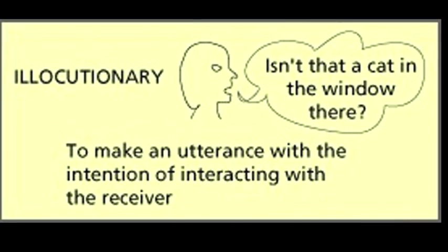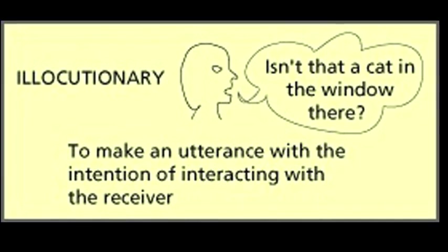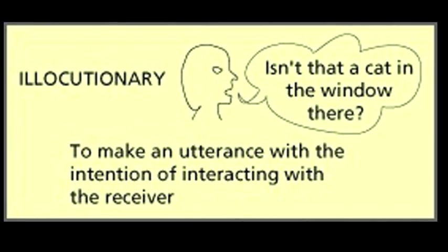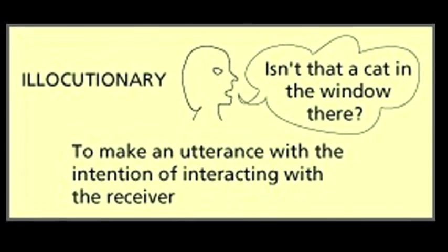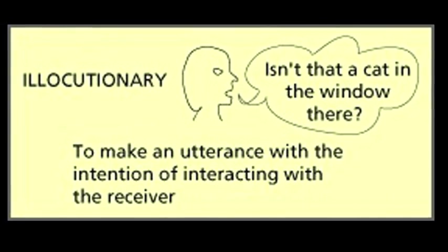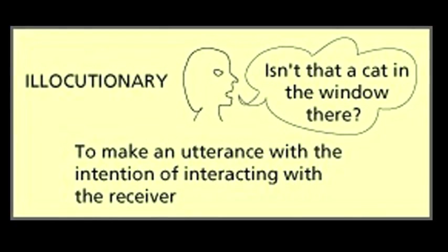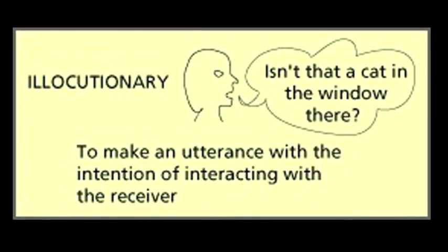Austin's third key term, illocutionary utterance, means to speak with the intention of interacting with the receiver. Thus an illocutionary utterance must be one said to another person.